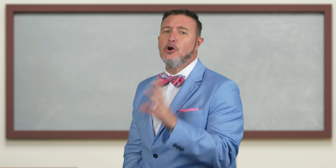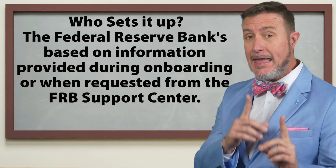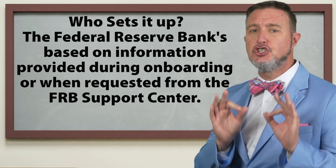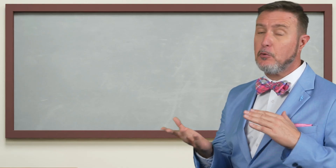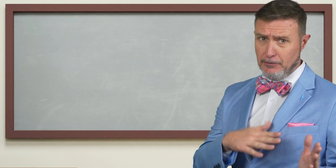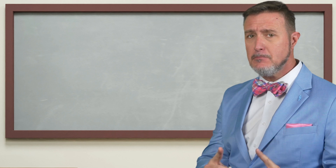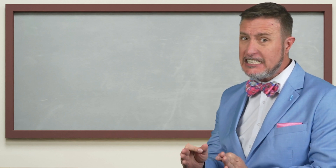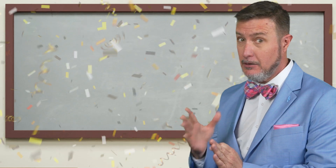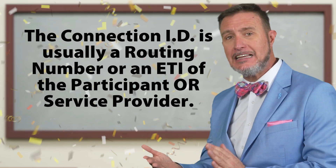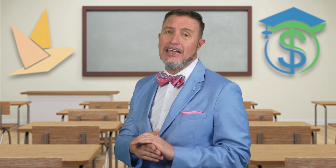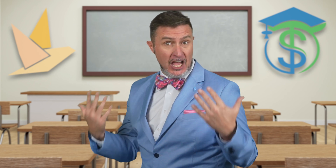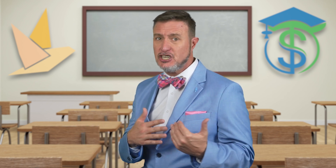The FedNow connection — just leave it at that. Who sets it up? The Federal Reserve Banks, based on information given to them during onboarding or requested from the FRB Support Center. What does it do? It maps to one or more participant profiles, allowing messages to flow to and from the FedNow service based on permissions enabled by the participant profile. Now, the connection party ID is usually a routing number or an ETI of the participant or service provider, and it is used in what we call the business application header message for every ISO 20022 message exchanged with the service.